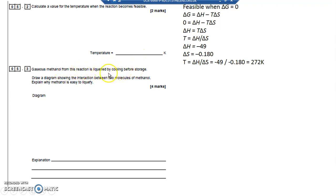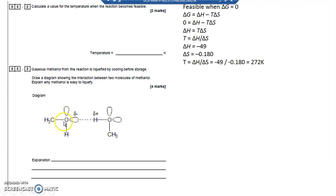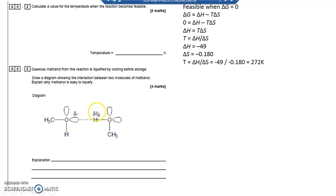When methanol is liquefied, draw a diagram showing two moles of methanol. Methanol is CH3OH. I've drawn two CH3OH molecules. Oxygen has two bonding pairs — one to H and one to CH3 — and two lone pairs because oxygen is in group six, leaving four electrons as two lone pairs. You must draw the lone pairs because it's those electrons that attract the delta plus on the H to form the hydrogen bond.